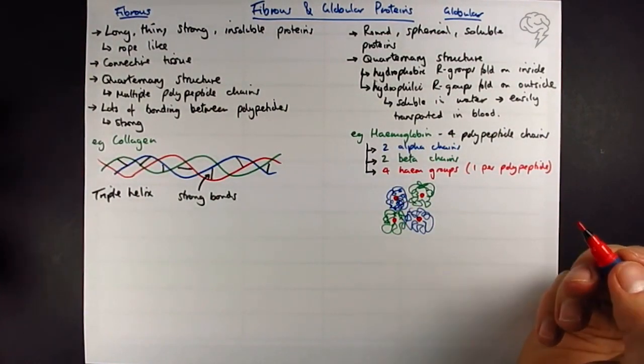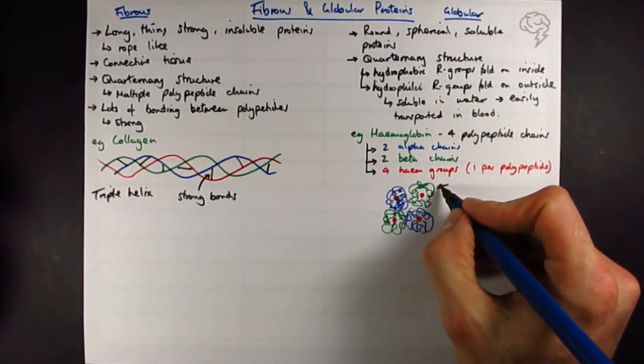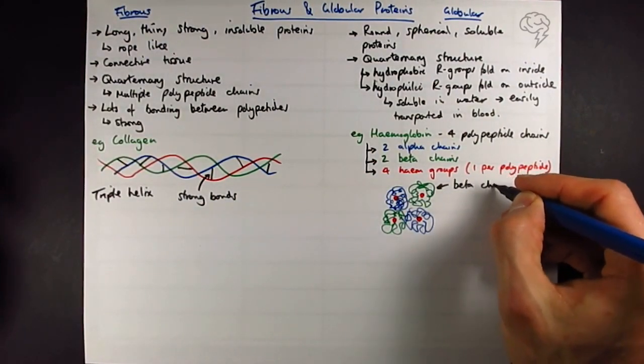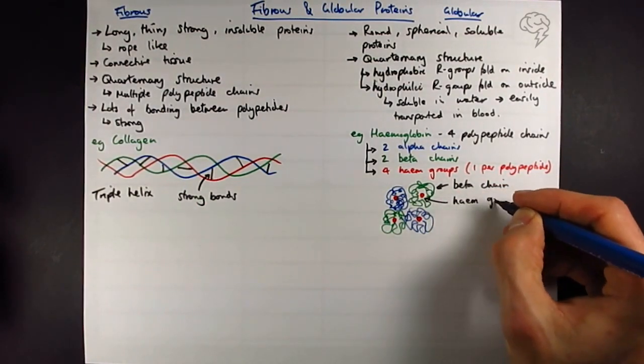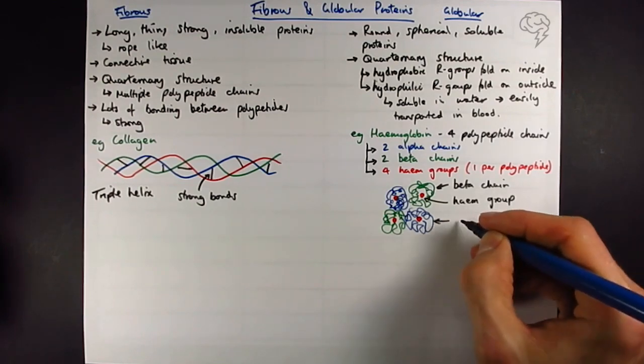Let's label that up, so we've got the beta chain, we have the alpha chain, we have our heme group, and the alpha chain.